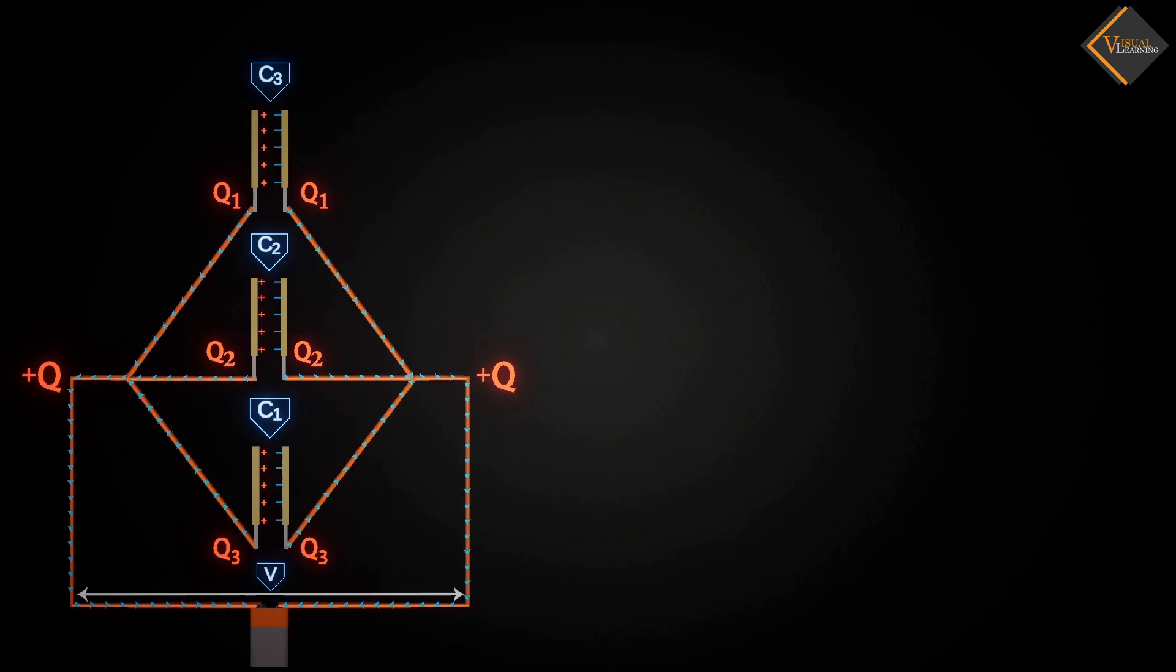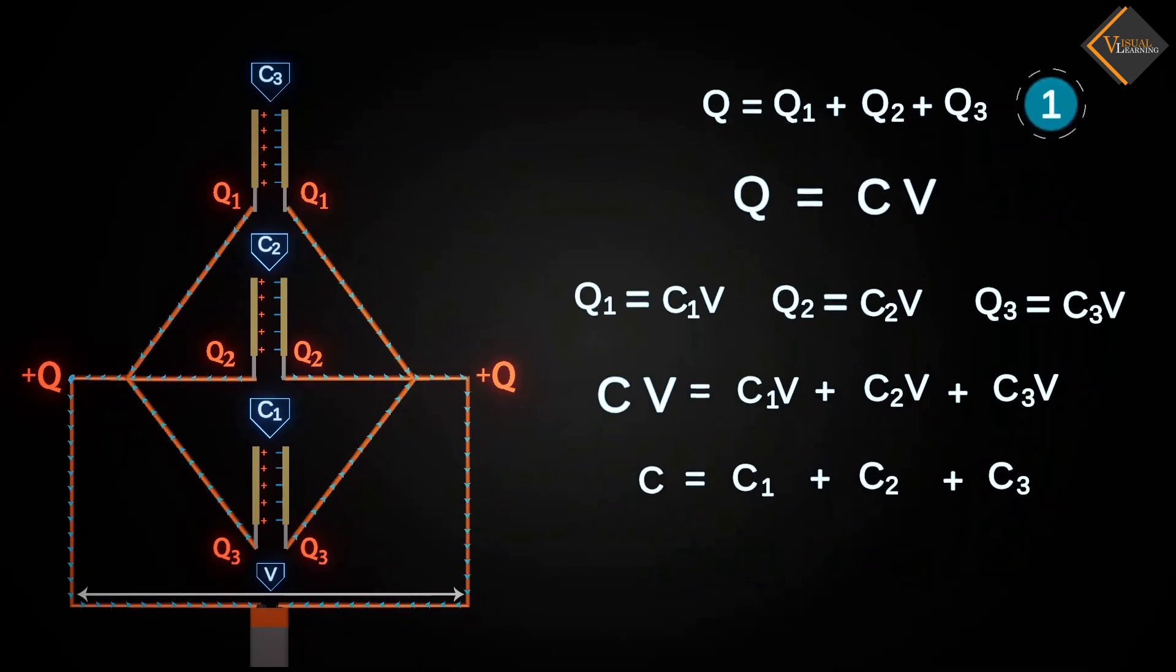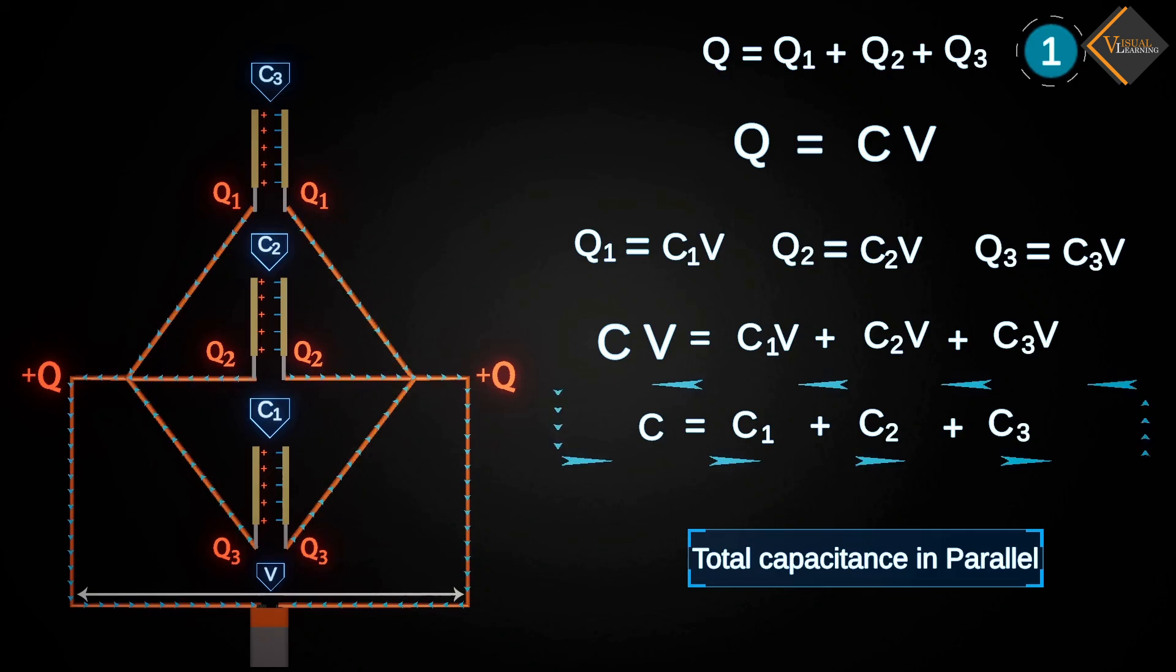Now, as we know that the total charge is equal to the sum of Q1, Q2 and Q3. If we change the value of charge in terms of capacitance, we get a relation that allows us to find Q1, Q2 and Q3. Putting these three values into one equation gives us a new equation. Now, in this new equation, we replace Q with CV and cancel out V on both sides. Eventually, we obtain the value of C, which represents the total capacitance in parallel grouping.